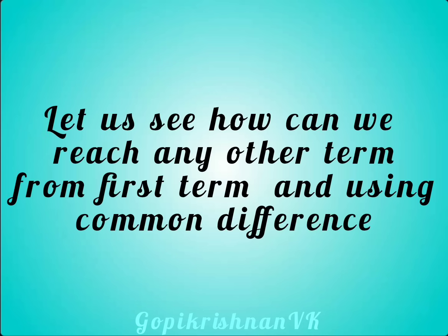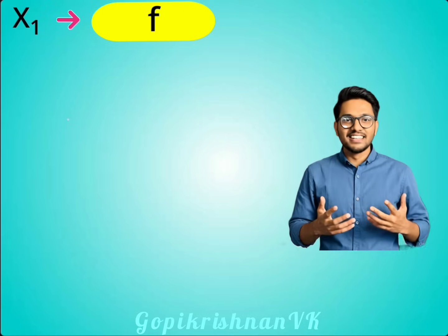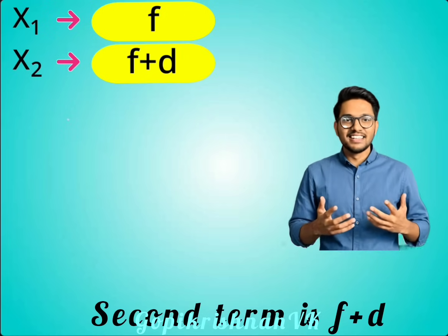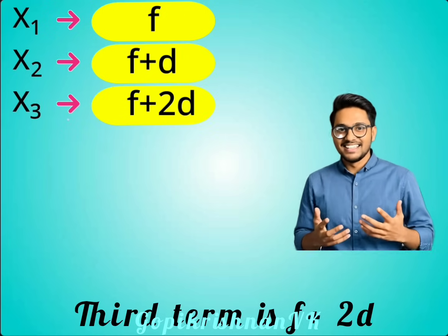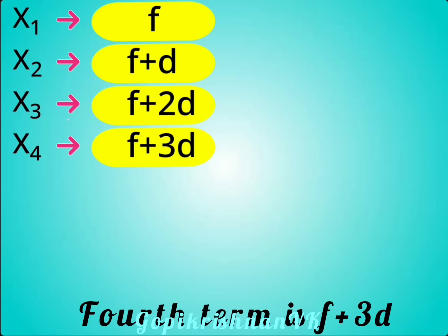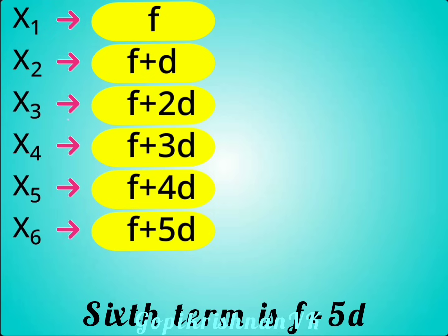Let us see how we can reach any term from the first term using the common difference. Suppose the first term is f and the common difference is d. The first term is f, second term is f plus d, third term is f plus 2d, fourth term is f plus 3d, fifth term is f plus 4d, and sixth term is f plus 5d.